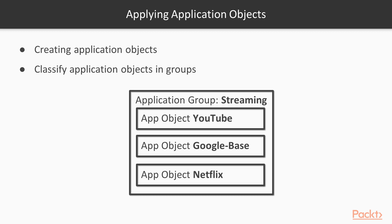We're going to get some application objects created. Now that we know how to apply groups, we're going to classify application objects into groups. If our environment wants to allow a set of predefined applications to a specific user or group, we can create a group and add all those applications in — making one single policy. We want to keep the policy table as clean as possible so we can troubleshoot and understand traffic flow in and out of the firewall without too much effort.